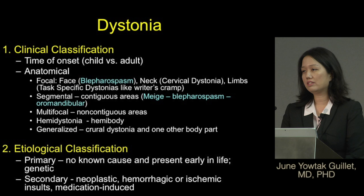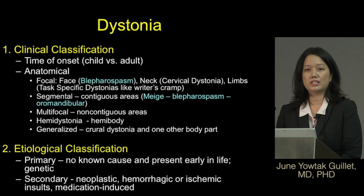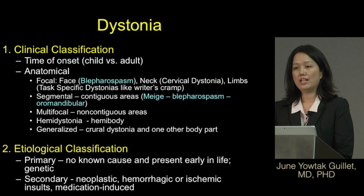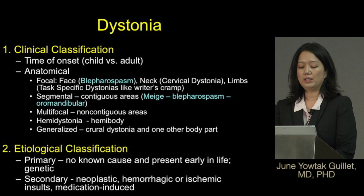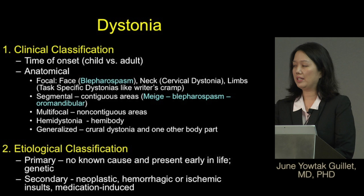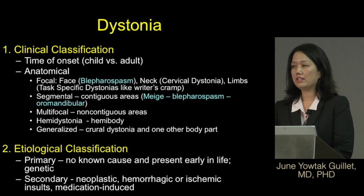Historically there have been two classifications for dystonia: the clinical and the etiological. The clinical classification focuses on the time of onset — child versus adult — or anatomical distribution. Today we'll focus on focal blepharospasm, which is located in the face, and Meige syndrome, which is a segmental dystonia with symptoms of both blepharospasm and oromandibular involvement.